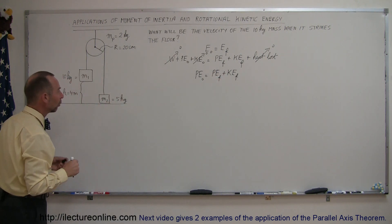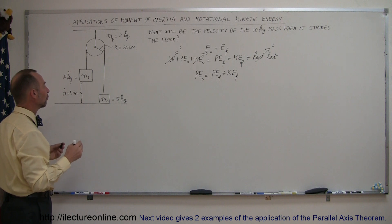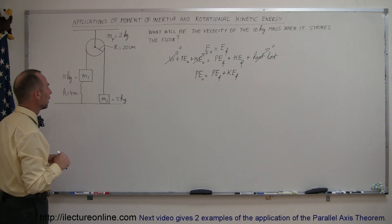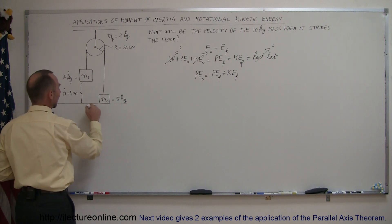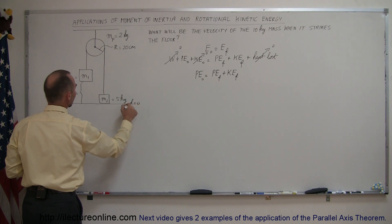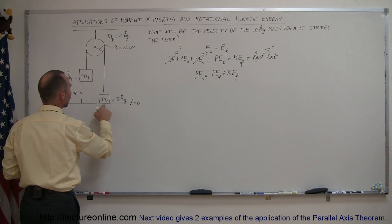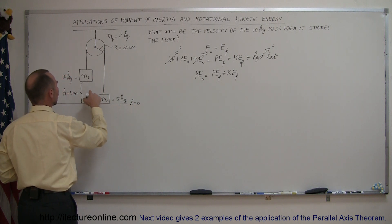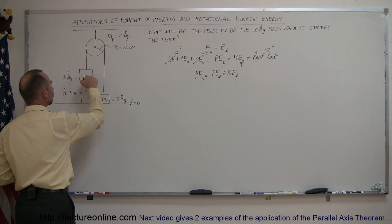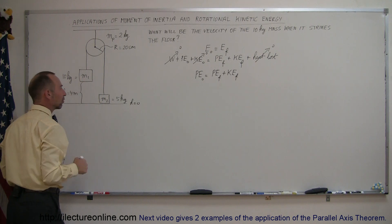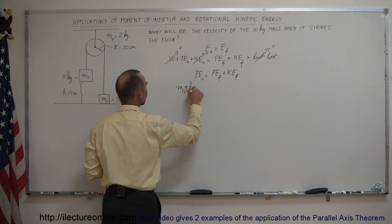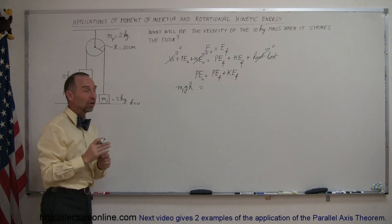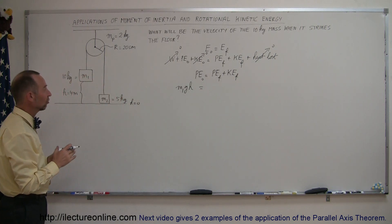Let's define what everything is before the system starts moving. Assuming that h equals zero is at the ground, and we can see that mass two is at the ground at the start, the only potential energy is due to the height of mass one. So we can say that m1gh is the potential energy into the system.